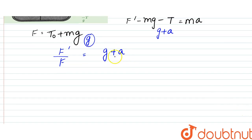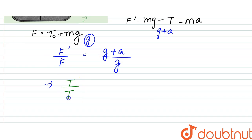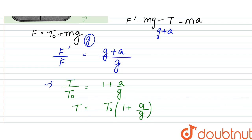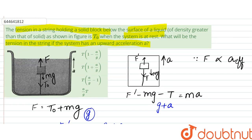So that would be (g plus a) by g. Similarly, we can write the tension — since force and tension are directly related to each other — so T by T0 would be equal to 1 plus a by g. So we can write T to be equal to T0 times (1 plus a by g). So our answer would be option B.